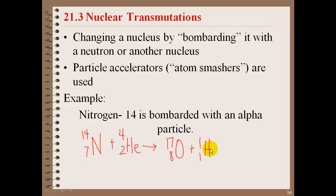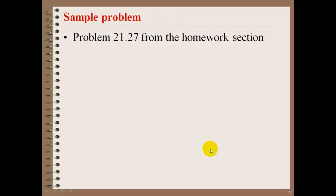A lot of times this is how they are developing or discovering these new elements. The elements that are still yet to be named is through these particle accelerators. Now, a sample problem would be from 21.27 from the homework section of your book. It says, complete and balance the following nuclear equations by supplying the missing particles.